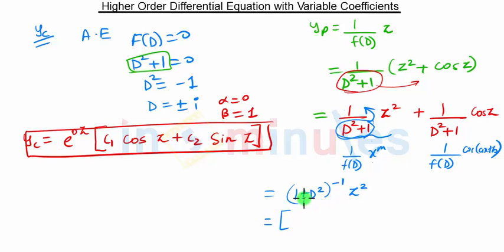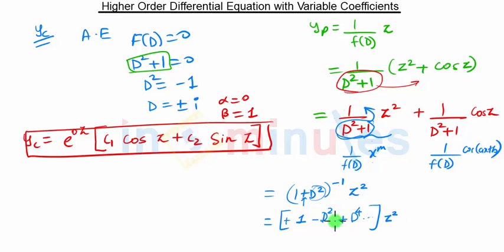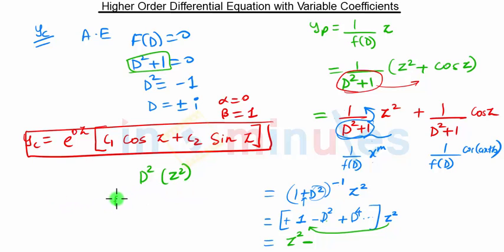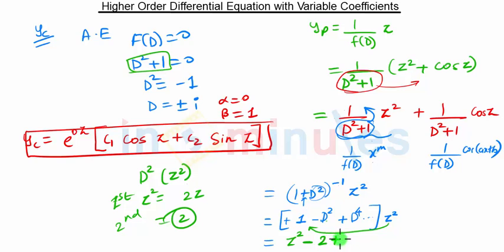We perform a binomial expansion. Since the sign is plus, the expansion alternates plus and minus: the first term is 1, the second term is -d², the third is +d⁴, and so on, all applied to z². Multiplying through: z² - d²(z²) + d⁴(z²) + .... The second derivative of z² is 2, and the fourth derivative of z² is 0. So this term simplifies to z² - 2.